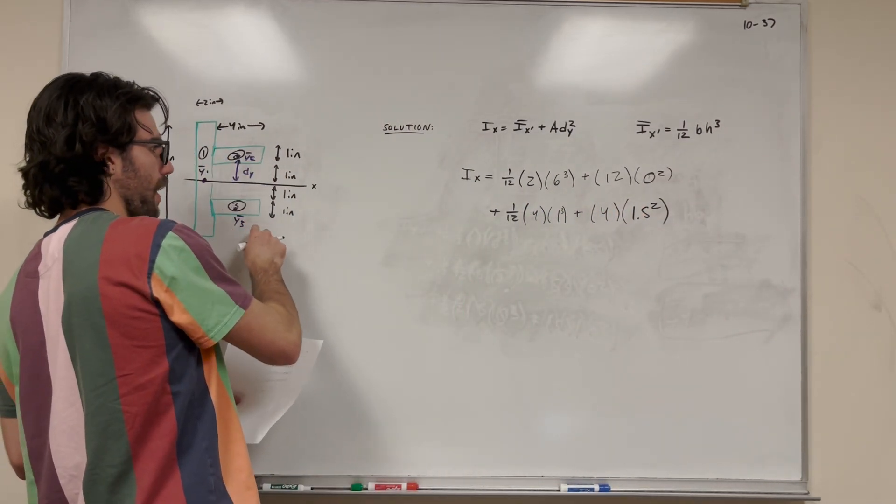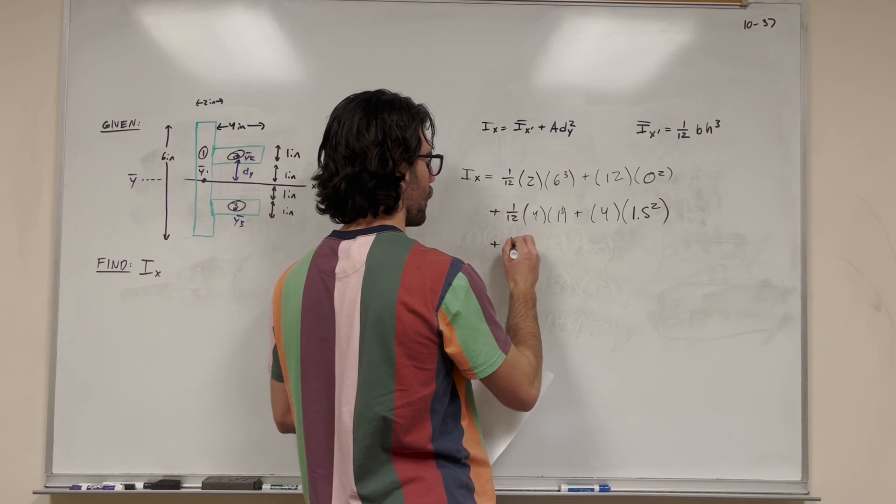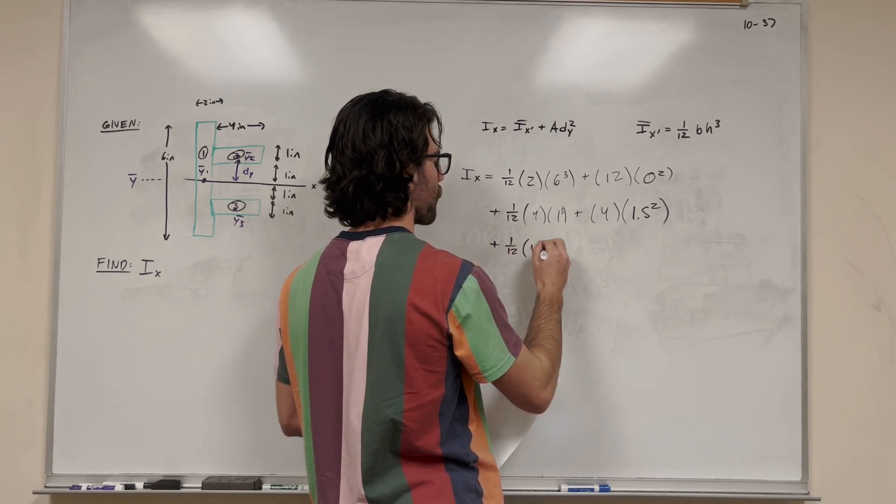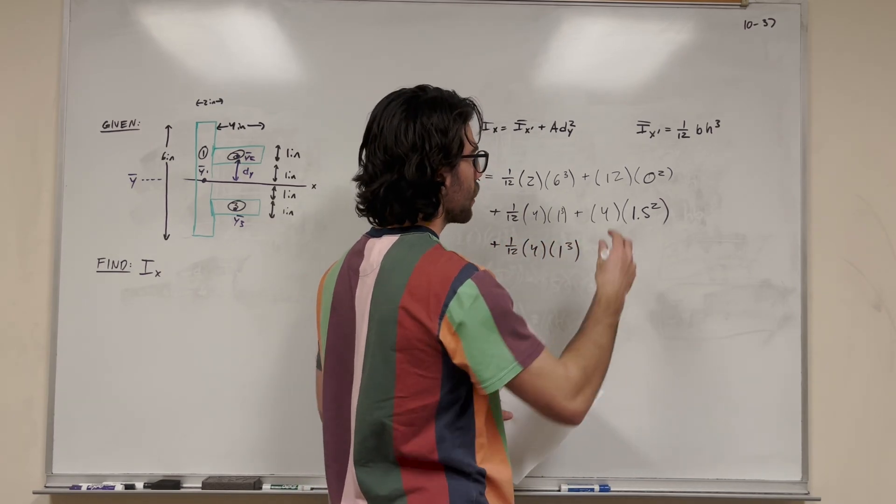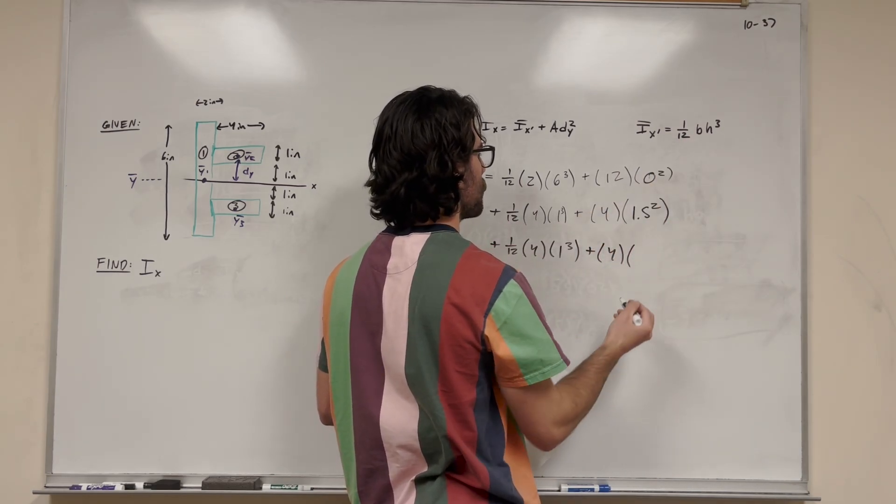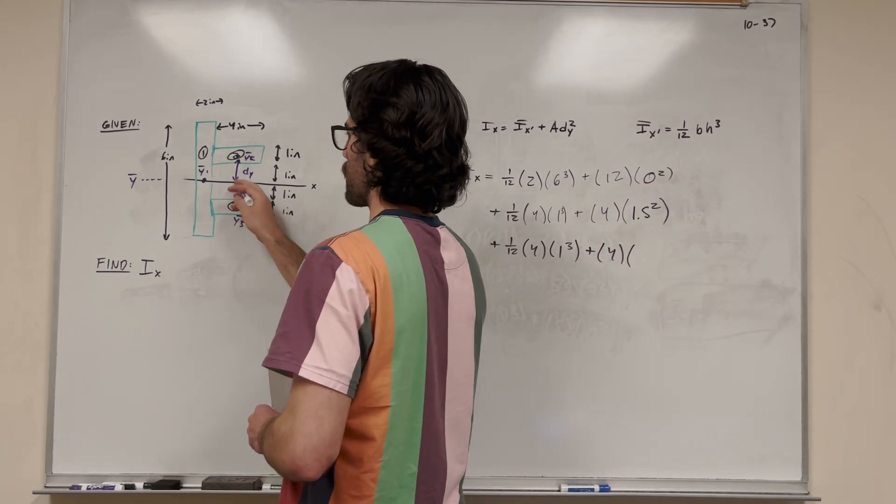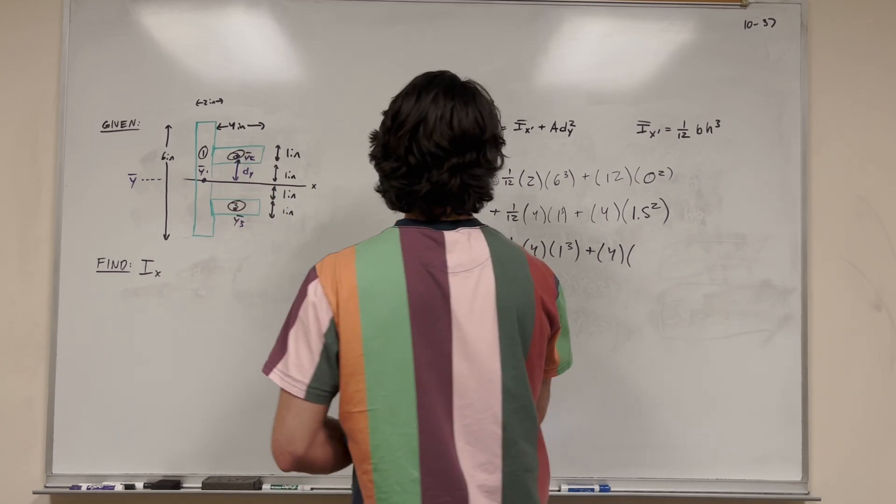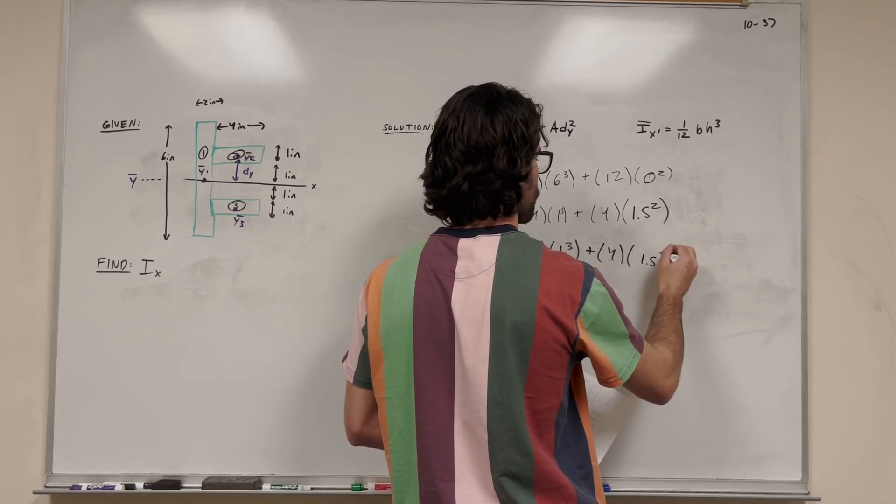So, now, we're going to do it for our final shape. Last time, 1-12. Its base is four inches. The height is one inch cubed, because that's just how the equation is. Add it to its area of four squared inches. And this distance is going to be the same distance as this, because it's symmetrical. So, we're going to do another 1.5 inches squared.